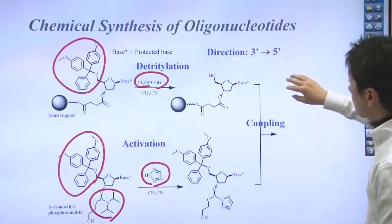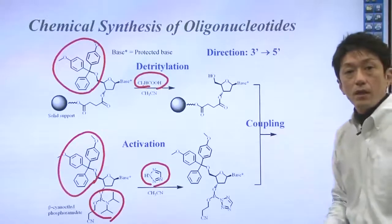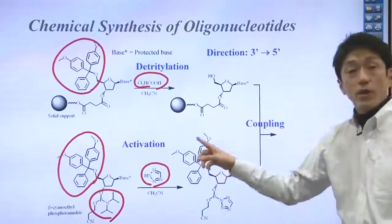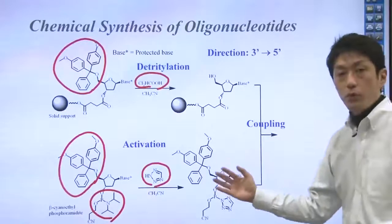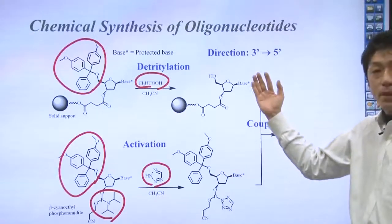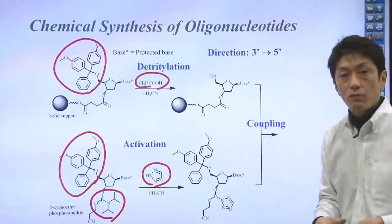Then, these two are mixed together for coupling. Then, if the next nucleotide is not protected by DMT, multiple molecules would be bonded to, in succession, creating undesirable products.